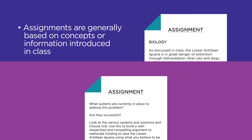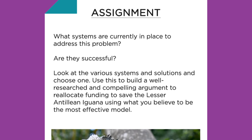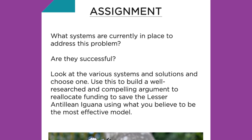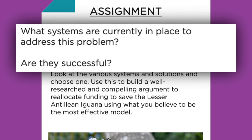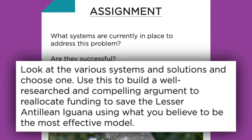Other common parts of an assignment sheet include prompts from your instructor to focus your writing and specific questions to be answered. For example: 'What systems are currently in place to address this problem? Are they successful? Look at the various systems and solutions and choose one.' In this example, the first two questions are not intended to be directly answered in your research paper — they provide a framework for the overall theme of the assignment.